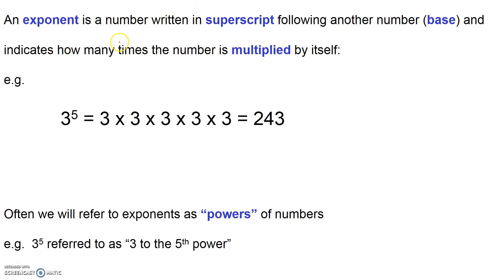So what is an exponent? Well, an exponent is a number written as a superscript following another number, which is referred to as the base, and it just indicates how many times the base is multiplied by itself. So three to the five represents the idea that three is being multiplied by itself five times in a row. We'll frequently refer to exponents as, rather than saying the exponent is five, we'll say that the power is five. So three with a superscript five following it is referred to as three to the fifth power.